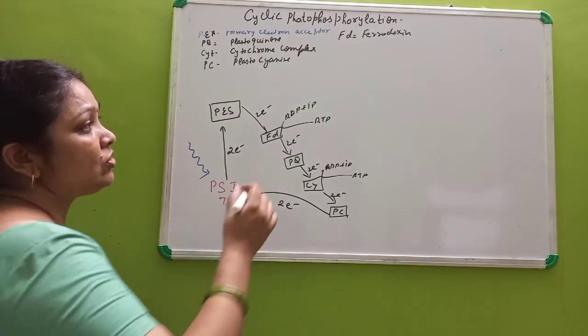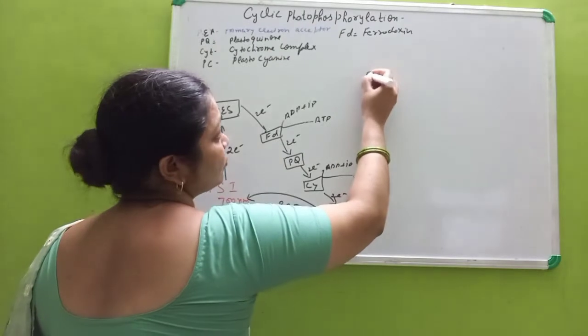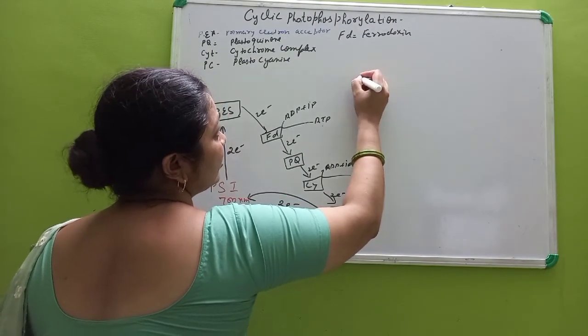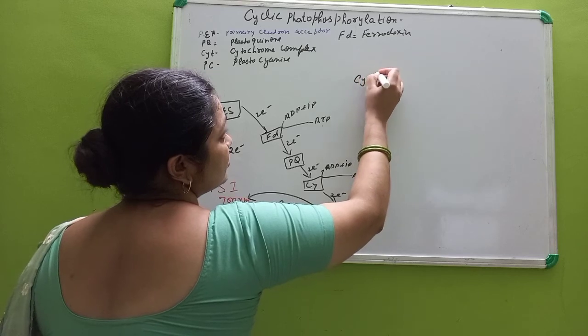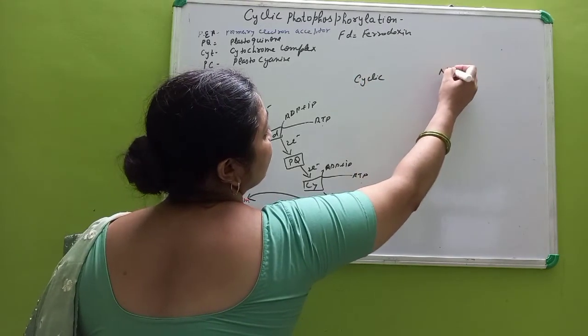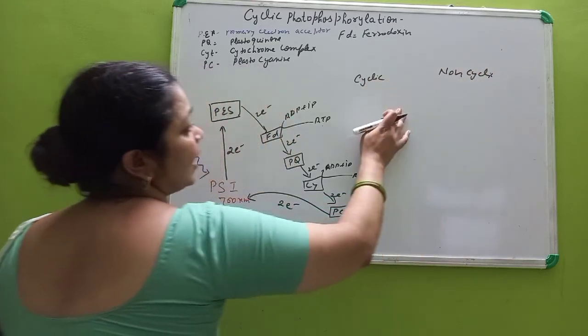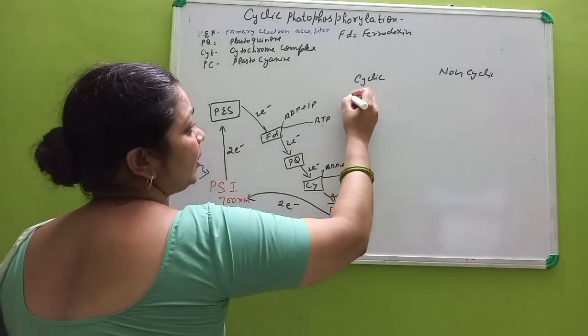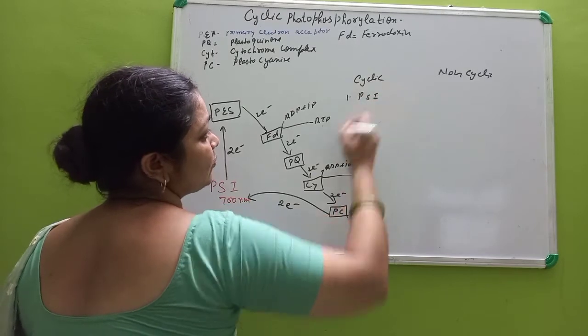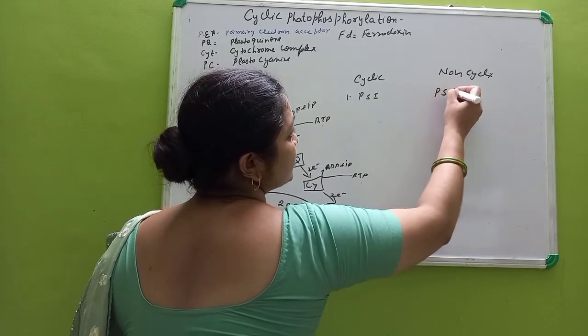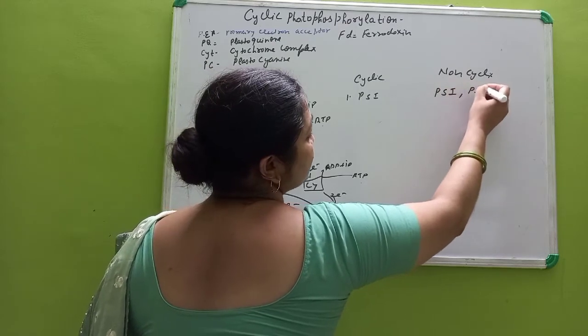So if we talk about difference between cyclic and non-cyclic photophosphorylation, in cyclic only one photosystem is involved, that is photosystem 1, whereas in non-cyclic both photosystem 1 and photosystem 2 are involved.